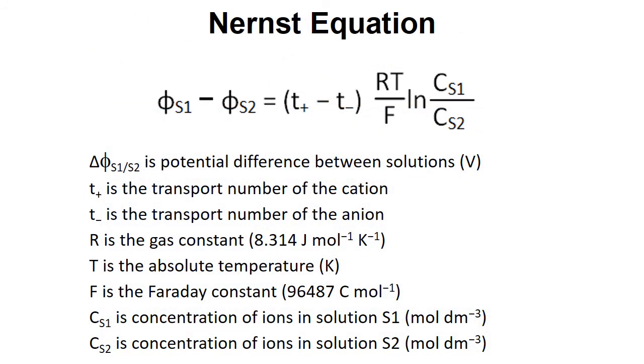The magnitude of this potential difference is given by the Nernst equation and the particular form of Nernst equation is shown here. So we've got φ_S1 (the electrical potential in solution S1) minus φ_S2 (the electrical potential of solution S2) equals, and then in brackets t_+ minus t_-. Now these are the transport numbers for the cation and the anion, multiplied by RT over F log of the ratio of the concentrations in the two solutions. So we've got concentration in S1 divided by concentration in S2.